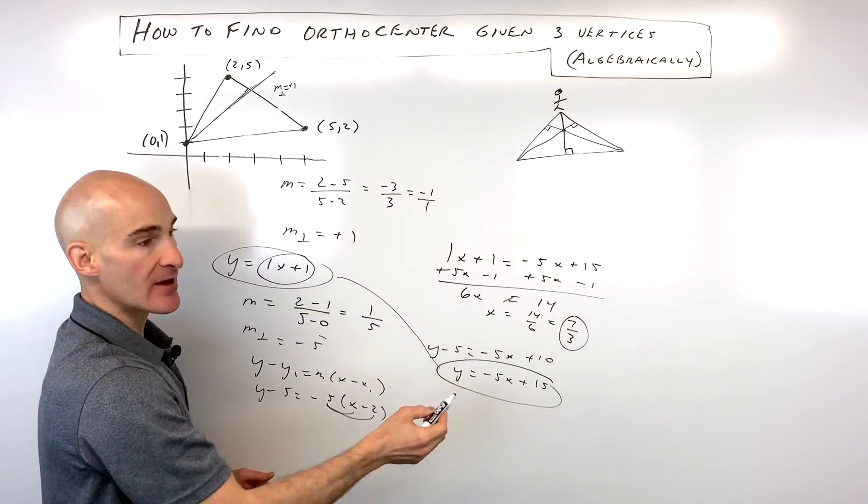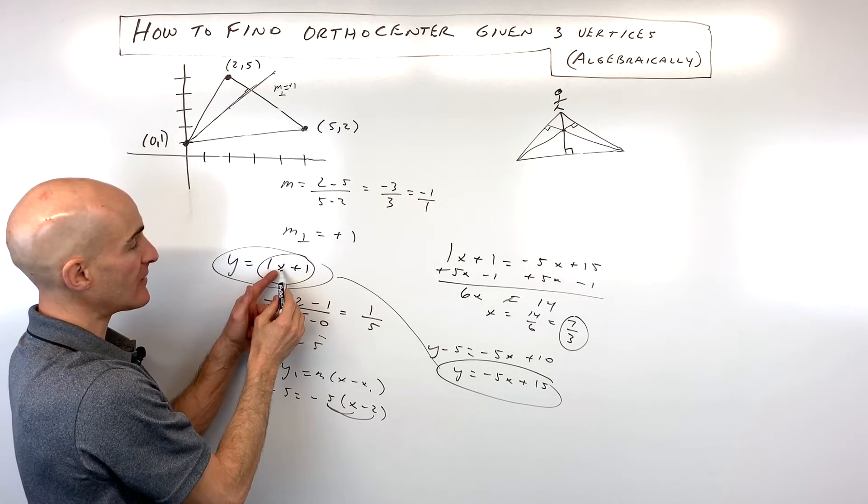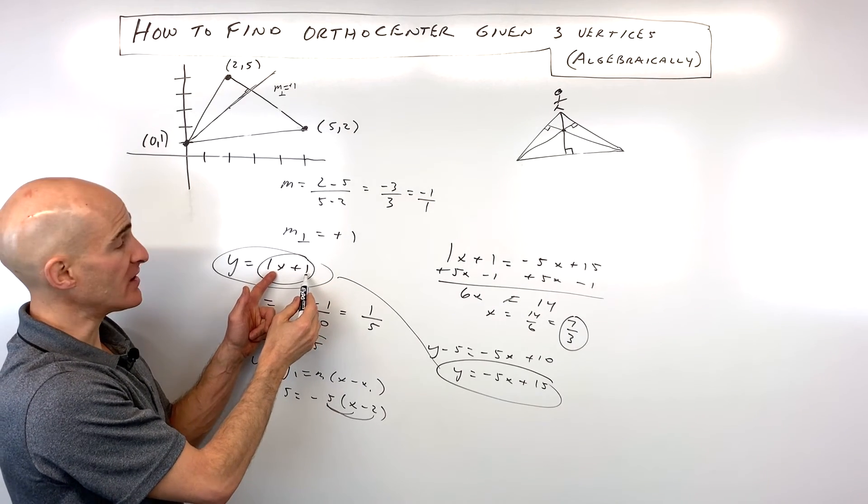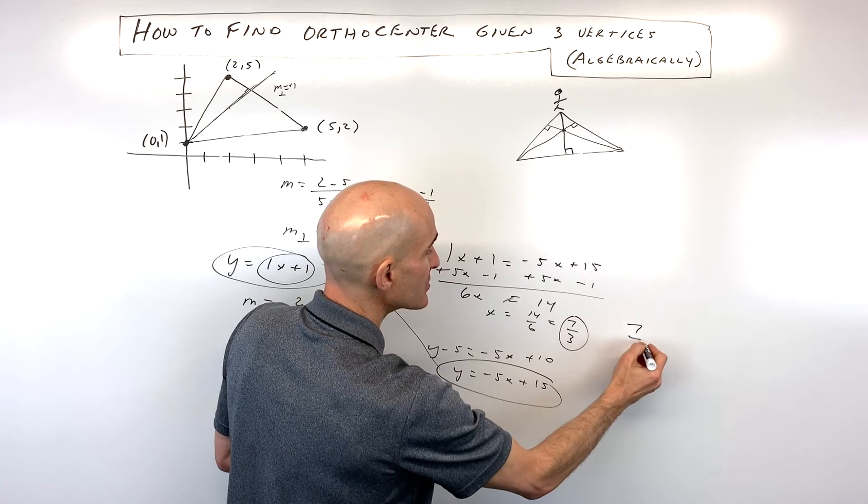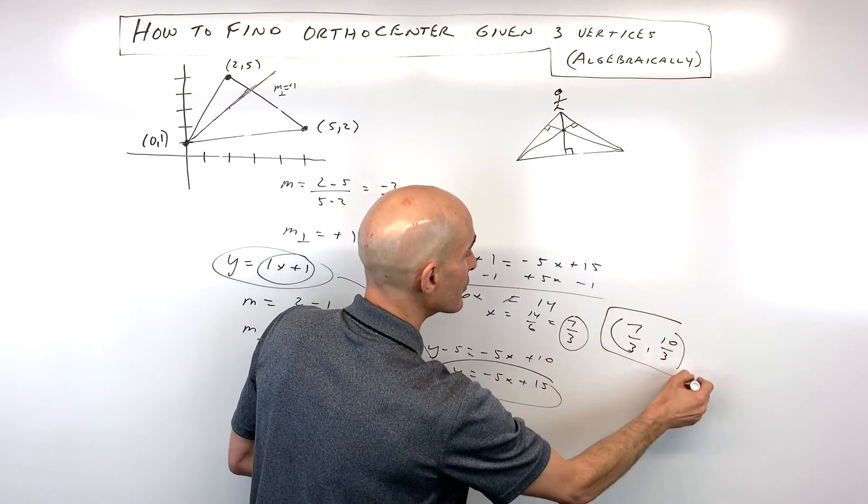Taking 7/3 and putting it back into the first equation: y = 7/3 + 1. Since 1 equals 3/3, that's 10/3. So the y-coordinate is 10/3, and our point of intersection is (7/3, 10/3).